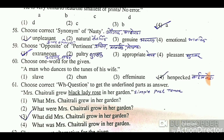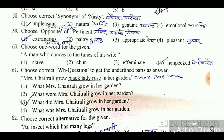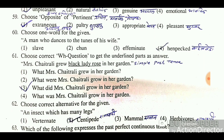Choose one word for the given description: 'A man who dances to the tunes of his wife' — a man who does whatever his wife tells him. Options: slave, effeminate, henpecked. 'Henpecked' means a man who is completely submissive to his wife, so 'henpecked' is the correct one-word substitution.